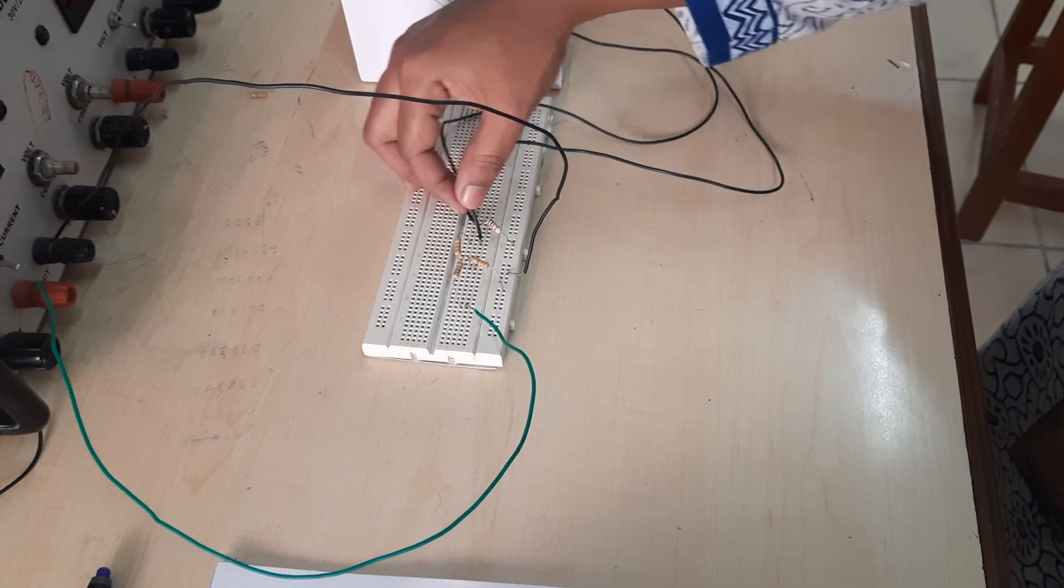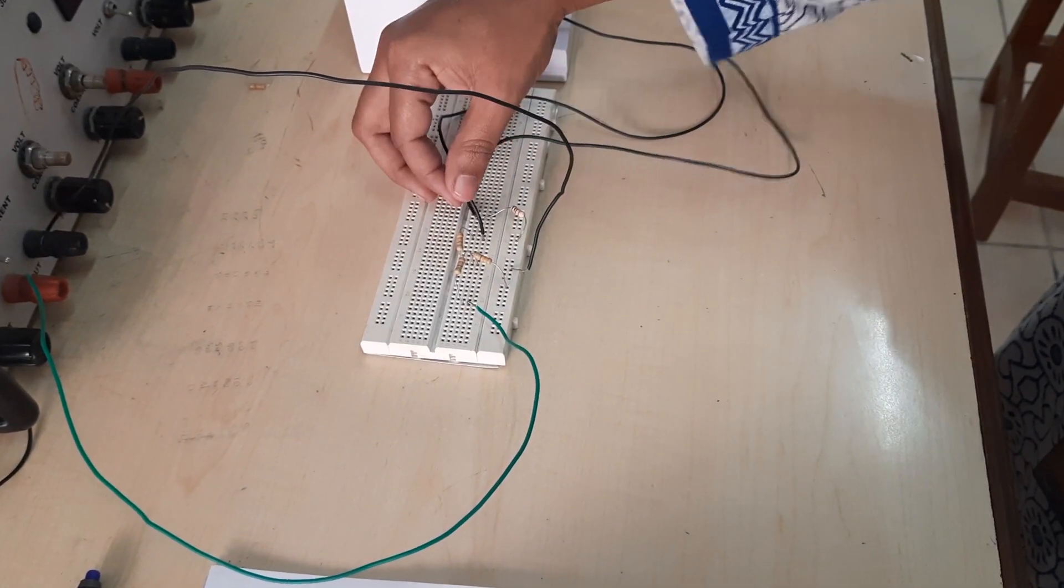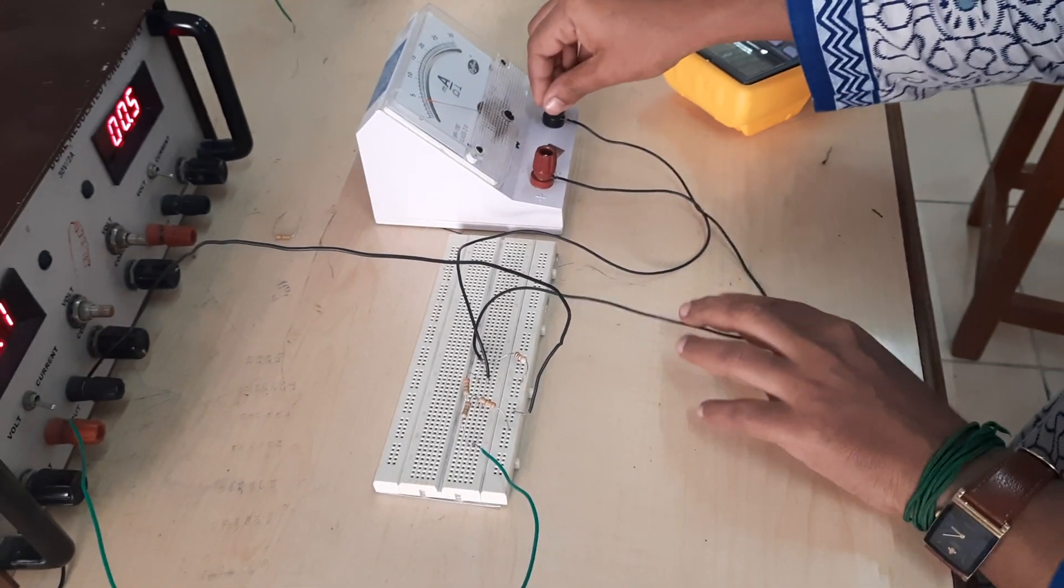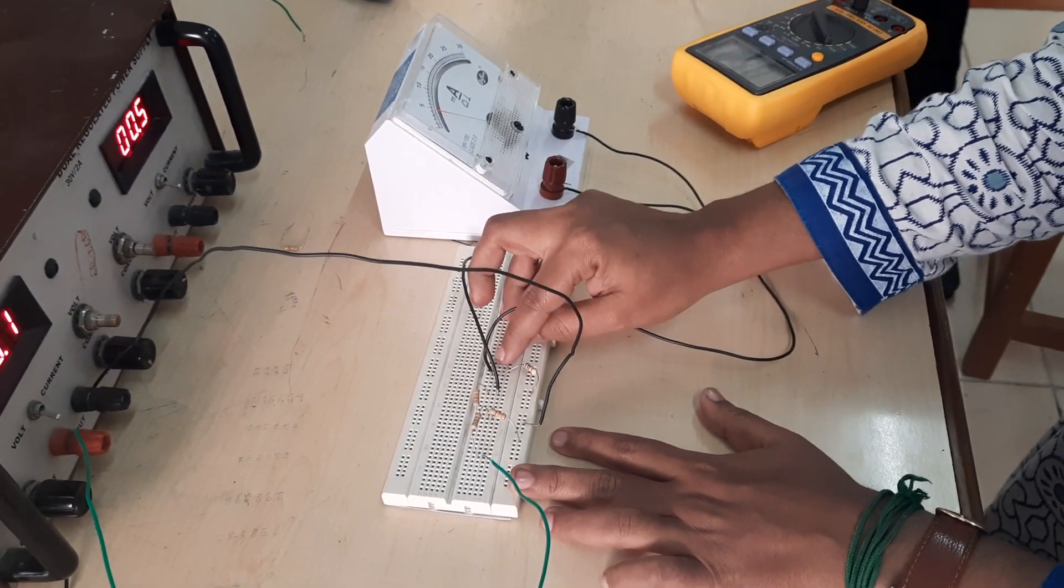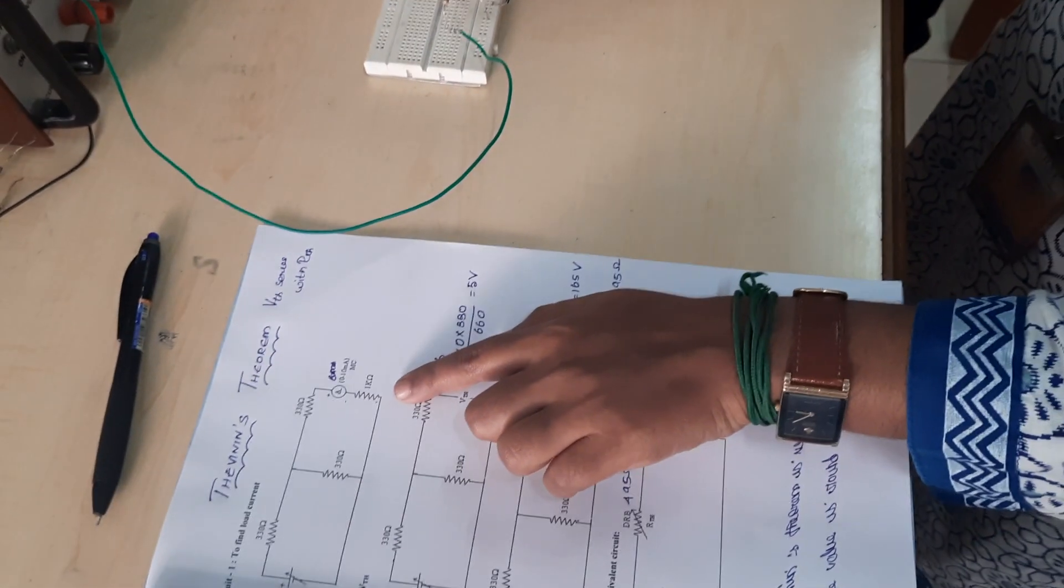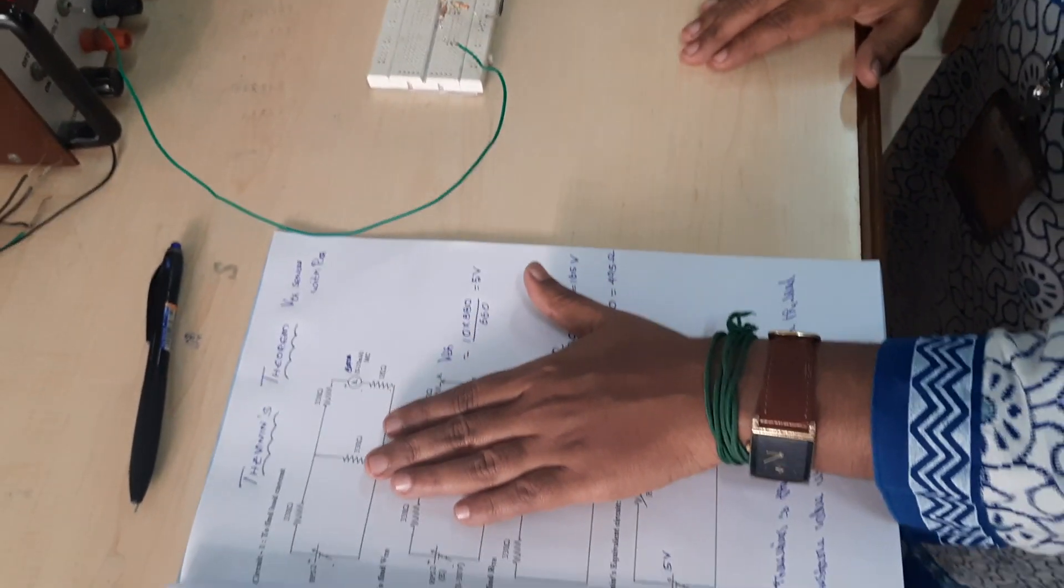From the last point of the 330 ohms, connect to the positive of the ammeter. The negative of the ammeter connects to one end of the 1k ohm resistor, and the other end of the 1k ohm is grounded. This completes the circuit connection for Thevenin's theorem.